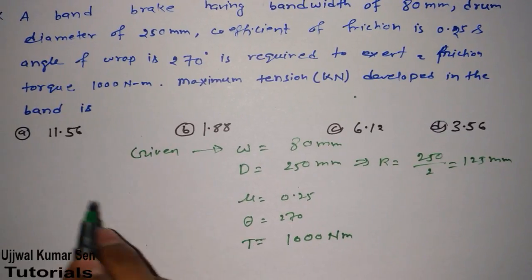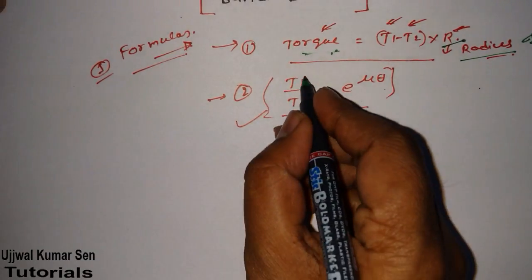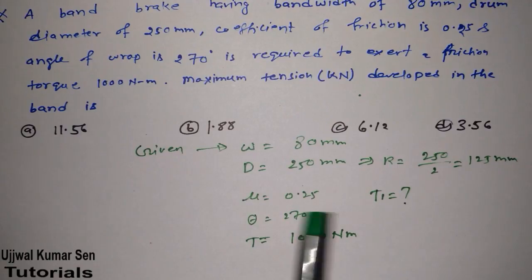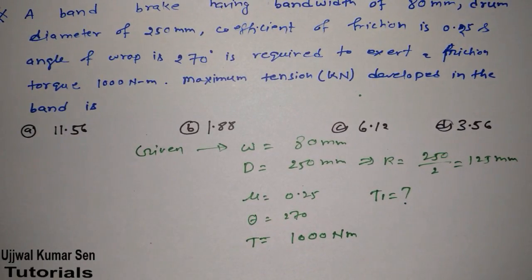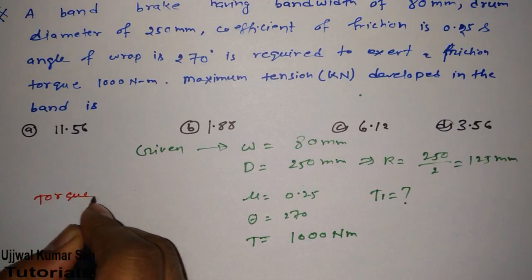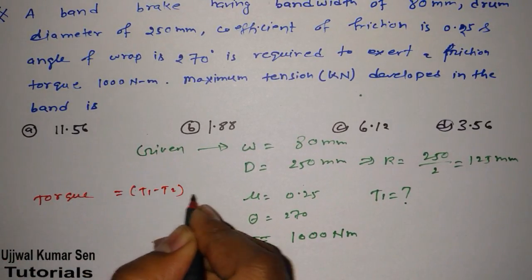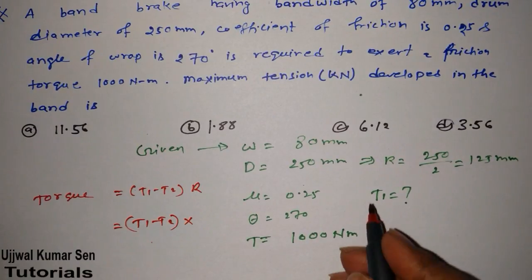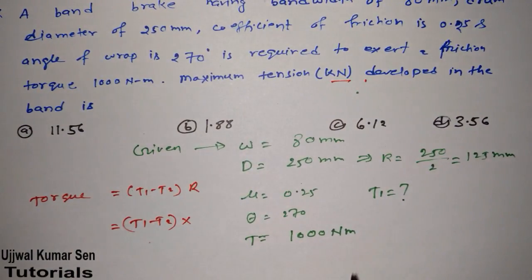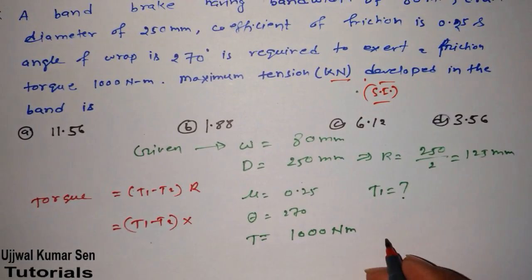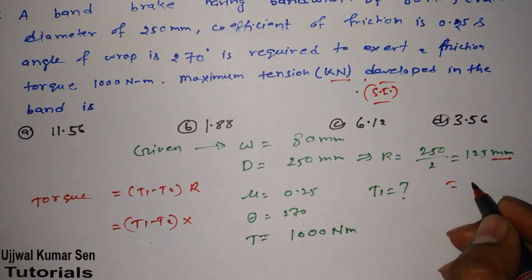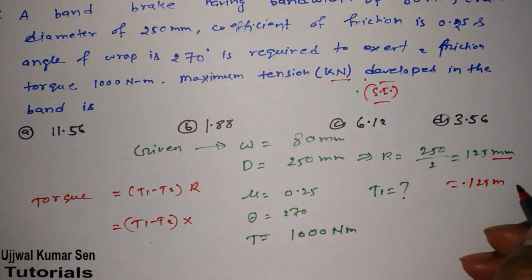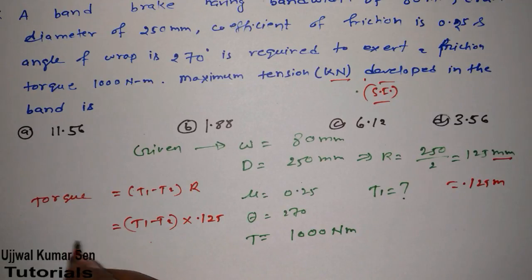They have asked us to find out T1 is equal to what? We have given all data. Now I have already shared with you formulas. So we know that torque is equal to T1 minus T2 into R. So we don't know what is T1. We don't know what is T2. But R, we know. Now look at the unit. They have asked kilonewton. That means they have asked in SI. So we have to change this Nm into meter. So we have to divide 125 by 1000. We get 125 meter.